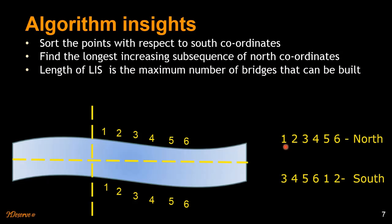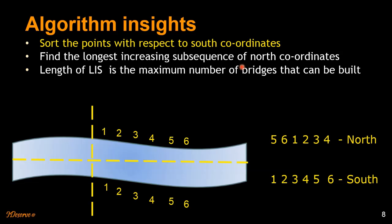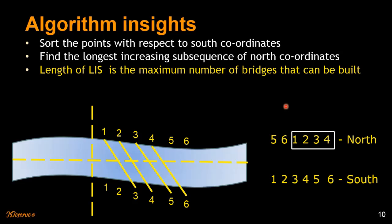For the second example, we have pairs: northern points 1, 2, 3, 4, 5, 6 and southern points 3, 4, 5, 6, 1, 2. Following the algorithm, we sort the southern points and the northern points move with them. Then we find the longest increasing subsequence of the northern coordinates, which is 1, 2, 3, 4. That gives us 4 bridges. We could have built bridges like 1-5 and 2-6, but those would cross — the algorithm correctly omits them.